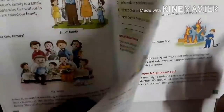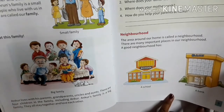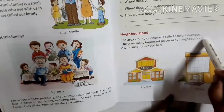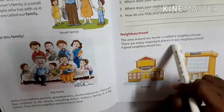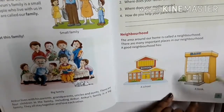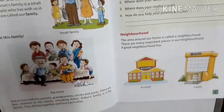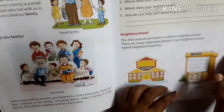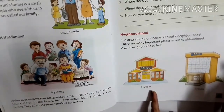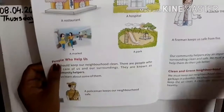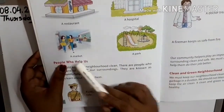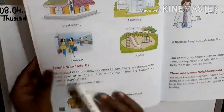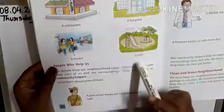Next: neighborhood. See — a school, a bank, a hospital, a market. There are many important places in our neighborhood. A good neighborhood has a school, a bank, a restaurant, a hospital, a market, and a park. Practice this — pages 7, 8, 9, and 10. Okay, children.